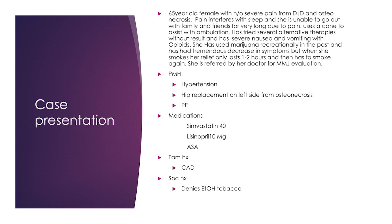I'm going to start with a patient of mine. She's a 65-year-old female with a history of severe pain from degenerative joint disease, arthritis, and osteonecrosis. Her pain interfered with all of her activities of daily living, keeping her homebound. She had to ambulate with a cane. She tried multiple therapies with no success — opioids caused nausea and vomiting. She had tried marijuana recreationally in the past, only getting relief for one to two hours, but she did get significant relief. She was referred to me by her primary care doctor for evaluation for medical marijuana.